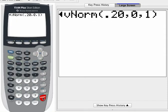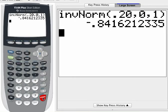So I'll press enter. That brings the command to the home screen. I'll press enter again. And what is returned to me is the z-score that corresponds to the 20th percentile. That's approximately negative 0.84.